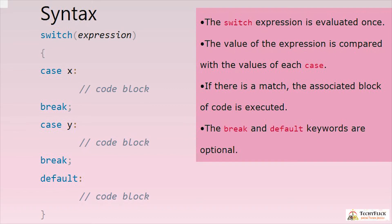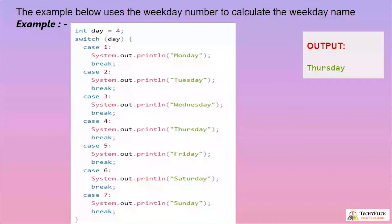In the switch example, we calculate the weekday name from a weekday number. We declare an integer variable: int day = 4. Then switch(day): case 1 is not matched. Case 4 matches, so system.out.println prints 'Thursday'. Day 3 would print 'Wednesday', and day 7 would print the corresponding day name.